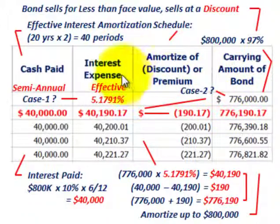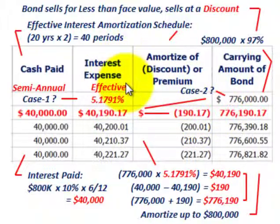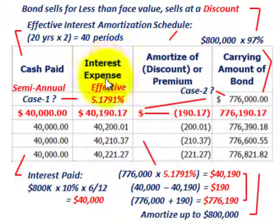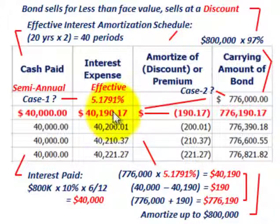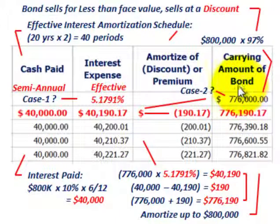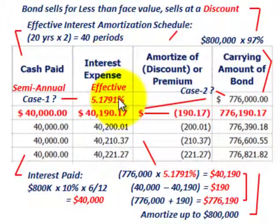When dealing with these bonds, we have to determine the interest expense for each period and set up amortization schedules. We've got to come up with an effective interest rate for each period. Since this bond pays semi-annually — twice a year — we have to determine the effective interest rate for each of those periods. We also need to know the carrying amount or issue price. We're going to look at two cases: first, determining the effective interest rate for this bond.